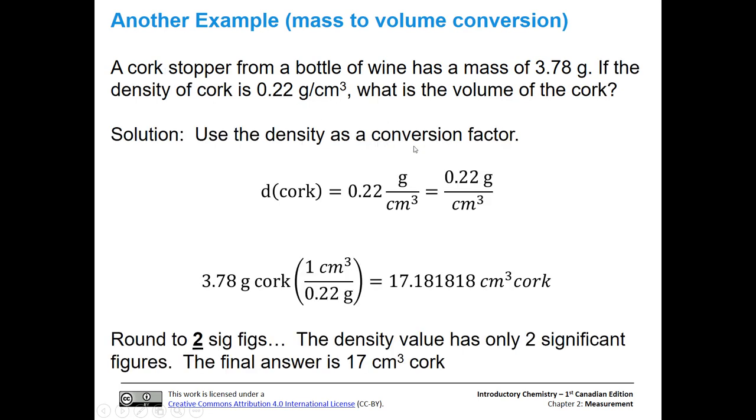Alright, so we're going to use the density again as a conversion factor. We can write that density as 0.22 grams over one centimeter cubed, so there's 0.22 grams per one cubic centimeter of volume. Let's flip that conversion factor because we have grams of cork and we want to go to volume of cork. We're going to put grams on the bottom. 3.78 divided by 0.22 grams, multiplied by one, and we get 17.18181818 cm³ of cork.